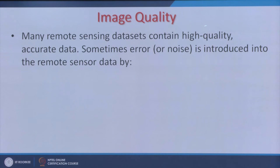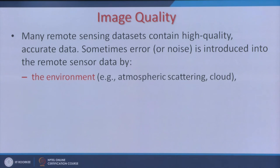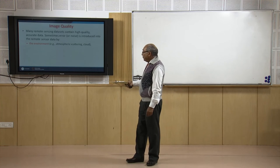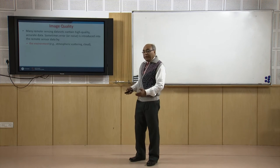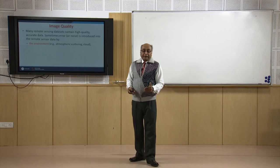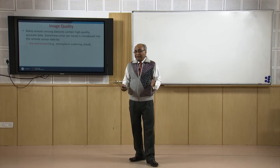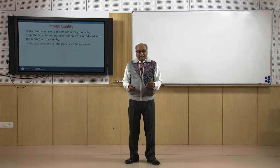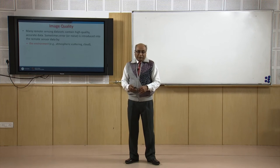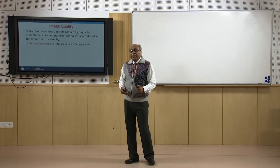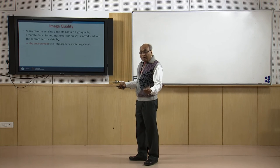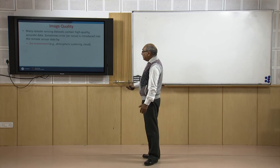Many remote sensing datasets contain high-quality, accurate data. However, errors or noise can be introduced due to environmental and atmospheric scattering — clouds, haze, fog, mist — all of which may deteriorate image quality. For example, in northern India during winter, haze is common. An image taken just after rain, with the sun out, yields very high quality because atmospheric distortions — haze, fog, clouds — are minimal, though you need an orbiting satellite available at that time.